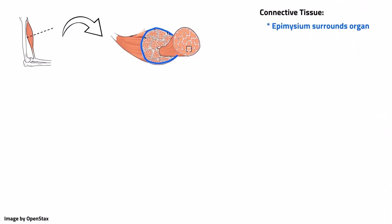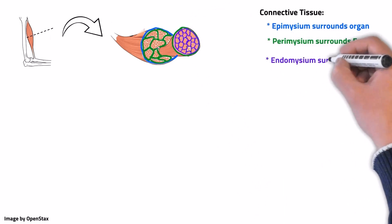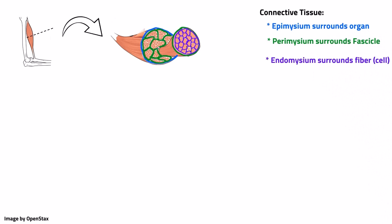Deep to the epimysium, we see multiple muscle fascicles, each surrounded by a tissue called the perimysium. The endomysium is connective tissue that separates the individual muscle cells, called muscle fibers.